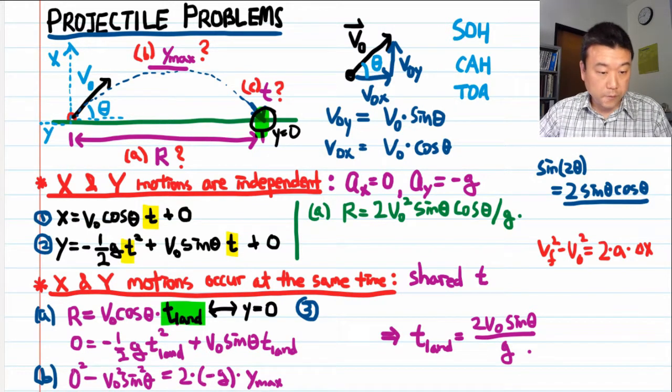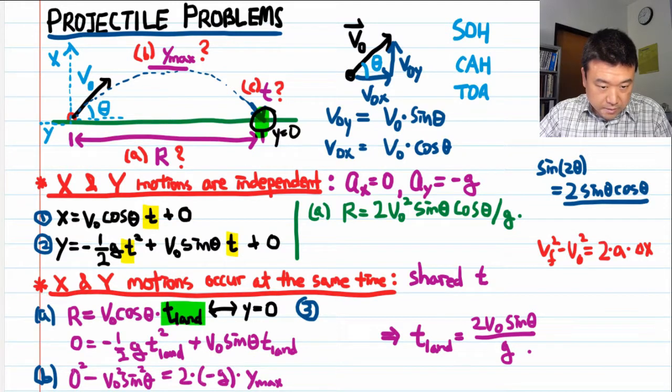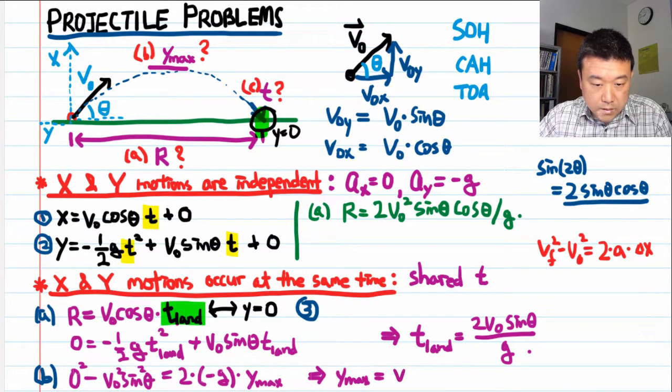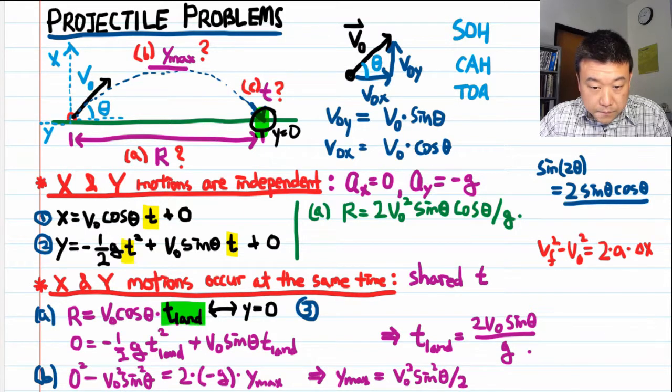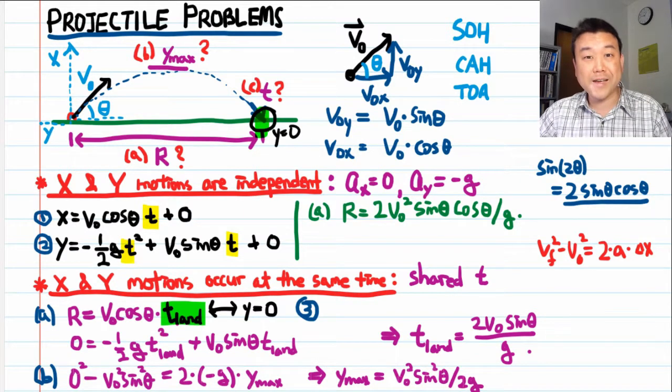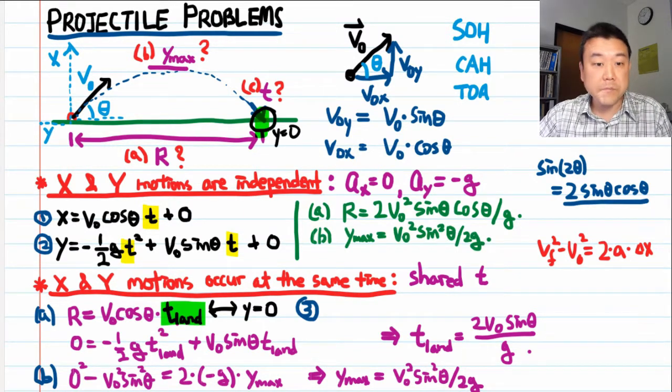We have to solve this for y max. And it looks like it's pretty simple. So, let me just do that. y max is equal to V naught squared sine squared theta over 2g. The two minus signs canceled out, fortunately.